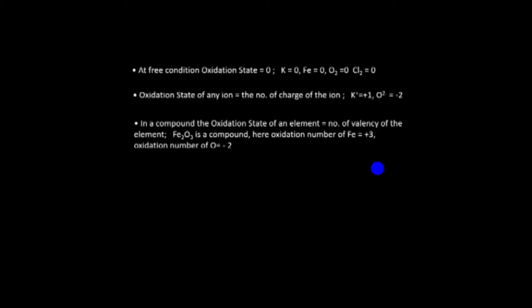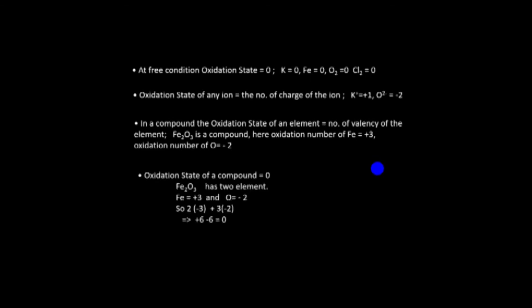Rule number three: the oxidation number of any element in a compound equals its valency. At isolated condition it is zero, but when an element is in a compound — for example, iron isolated is zero, but iron in iron oxide — the oxidation state of iron equals its valency, which is plus three. Oxygen has oxidation number minus two because of its valency.